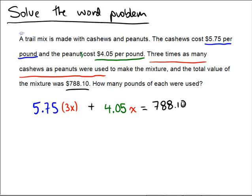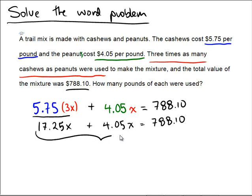And now we are in algebra land. 5.75 times 3 makes 17.25x plus 4.05x equals 788.10. Combine like terms. 17.25 plus 4.05 looks like 21.3x equals 788.10.